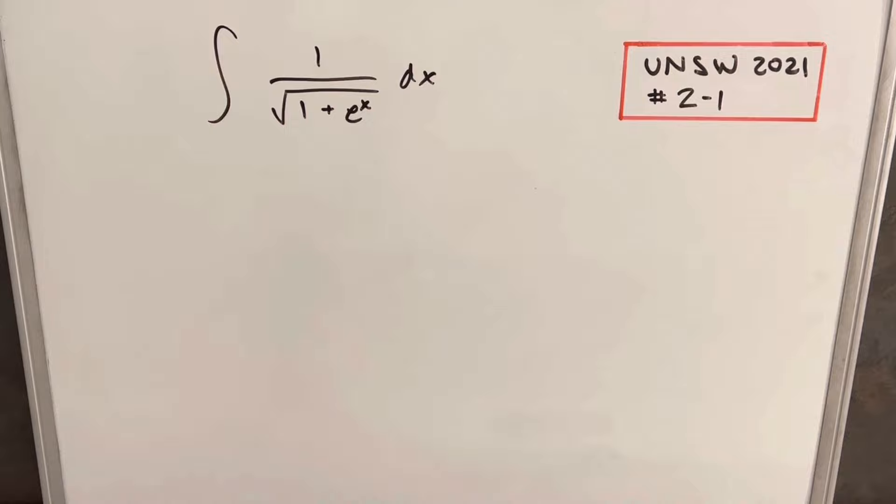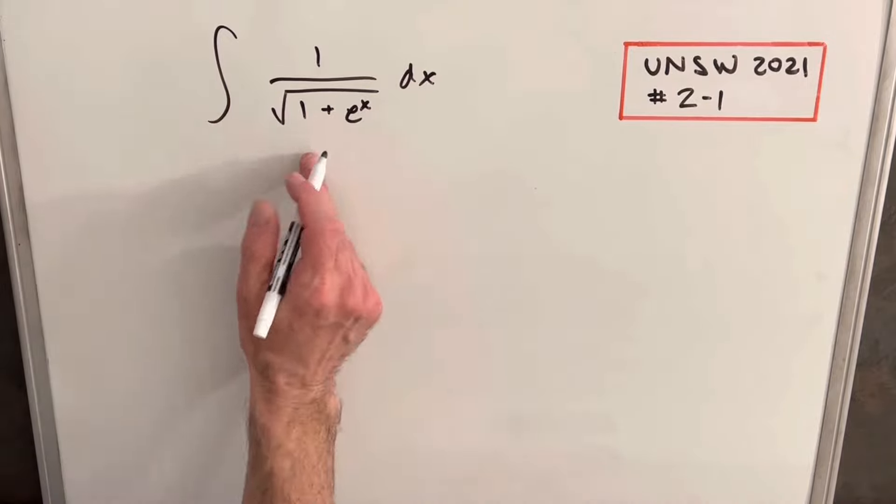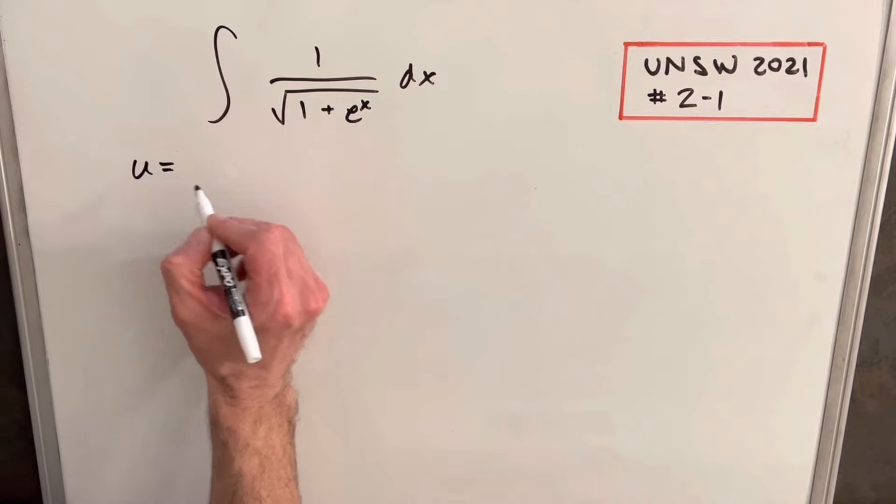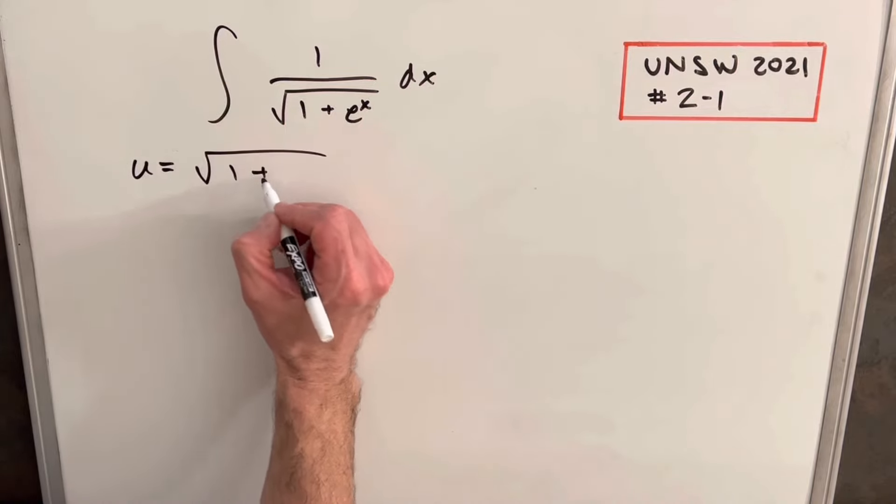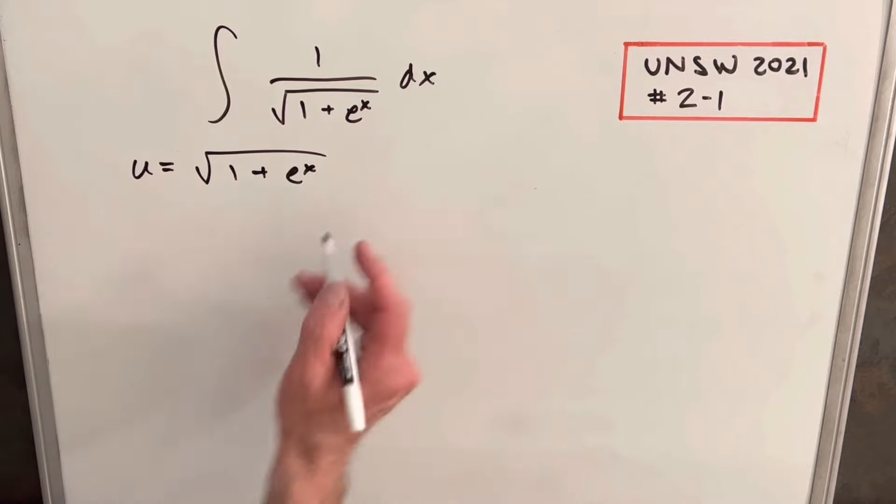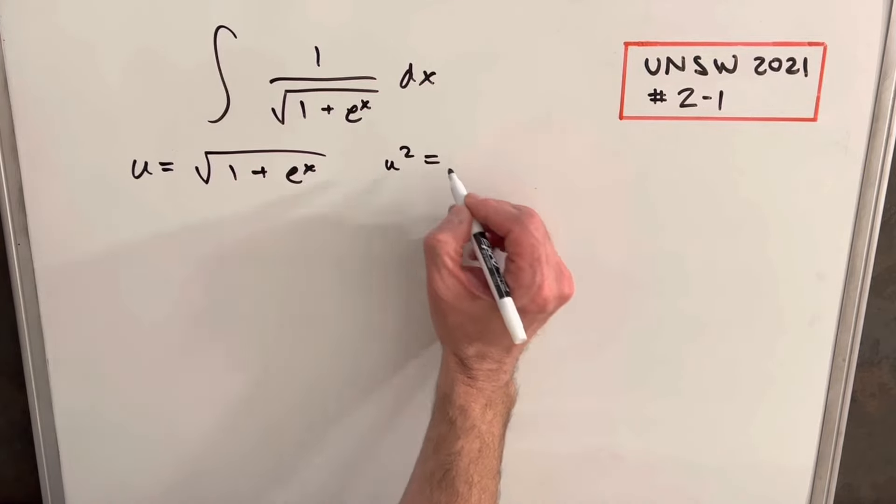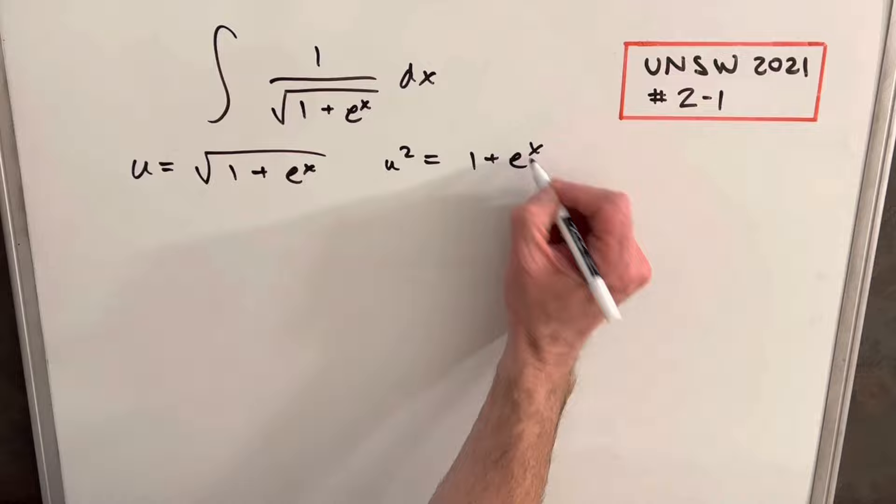I'll make a u-substitution, setting the whole denominator equal to u. So u equals the square root of 1 plus e to the x. If we square this, we get u squared equals 1 plus e to the x.